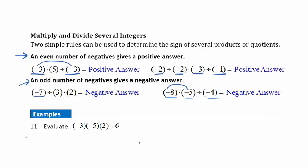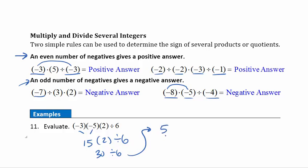Example 11: evaluate by multiplying and dividing left to right. Starting with negative 3 times negative 5, that gives positive 15. Then 15 times 2 gives 30. Finally, 30 divided by 6 gives positive 5. Double-checking: the original problem had an even number of negatives, so the answer should be positive — and it is, so we have confidence in that answer.